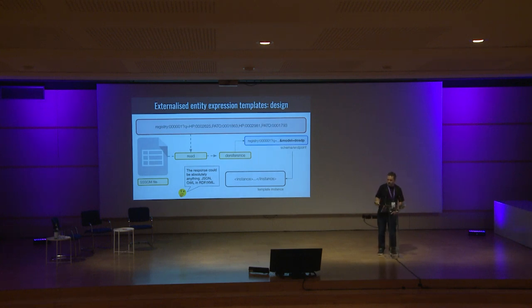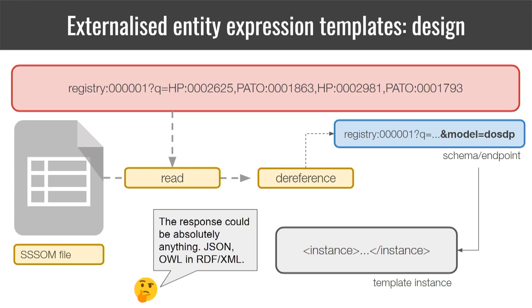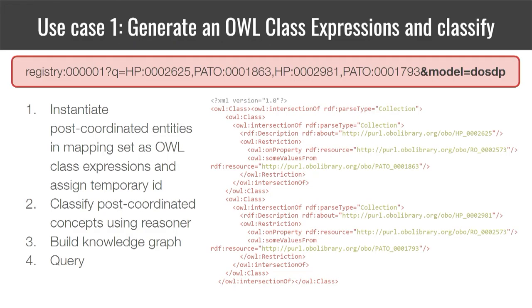They can say: give me an instantiation of this pattern using the DOSDP system, or give me an instantiation of this expression using a simple JSON schema. The idea is we decouple mappings completely from the representation of the post-coordinated concepts and document those in a separate space — think of it as a library of templates, schemas, and design patterns.